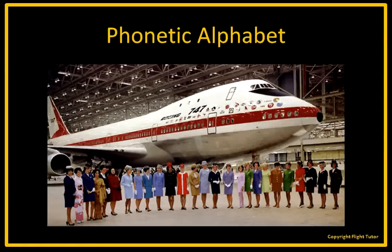In this tutorial, I'm going to go over pronunciation of the phonetic alphabet as according to the Airman's Information Manual. In addition, I will play for you a sample recording of the Morse code for that letter, because when we tune and identify to a navigational aid, be it a VOR or NDB, the beeping sound that we hear will be the Morse code for the three-letter identifier. So let's continue and see the letters of the alphabet.